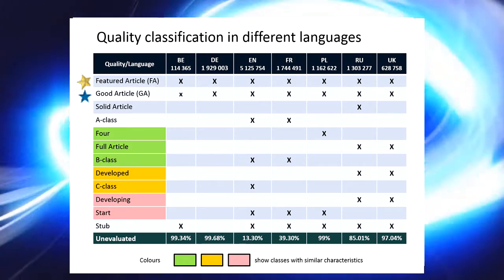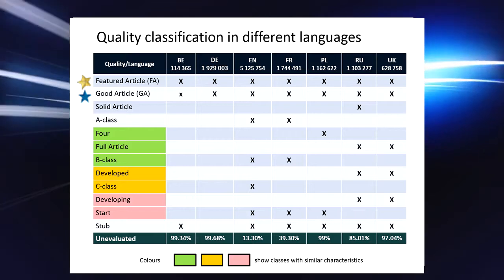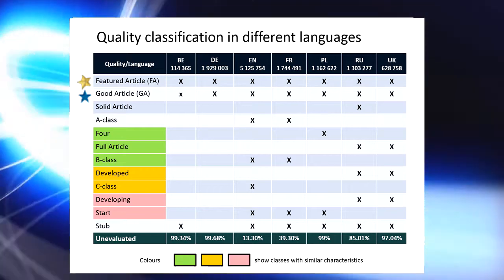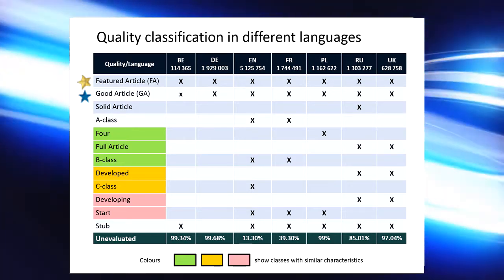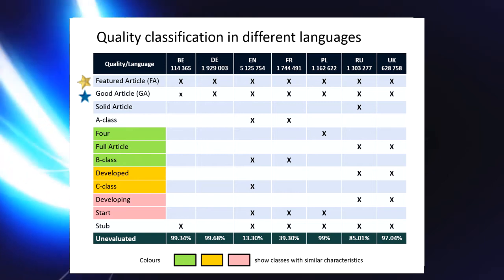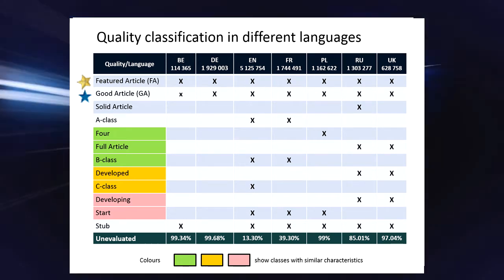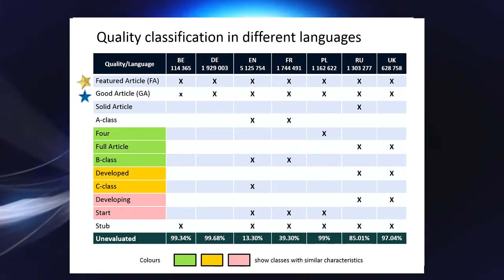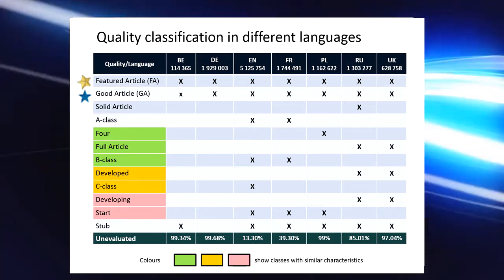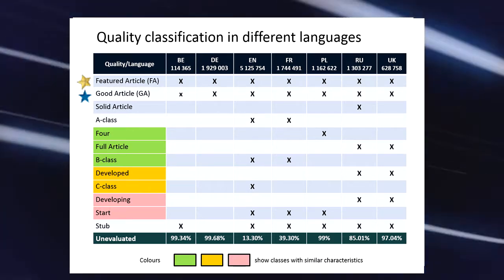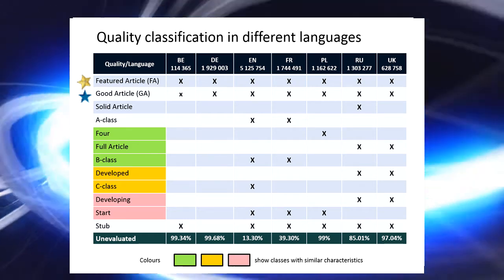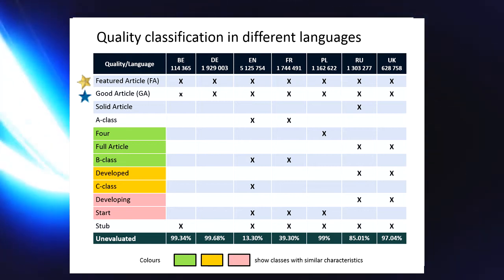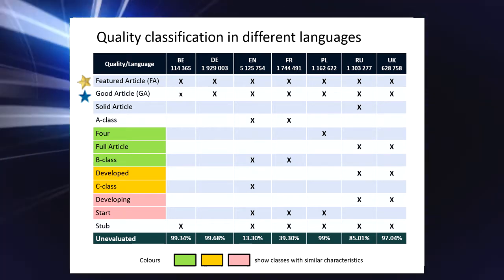The voting has to be initiated by an interested user, typically the main contributor, who very often also works on improving the article. As not all users are interested in starting the evaluation process, there is a problem of a large number of unevaluated articles. A concern is also the subjectiveness of the assignment of lower quality classes — a quality class can be assigned by a single user without any prior discussion, and a user interested in self-promotion might assign a higher class to the article than would result from the rules and principles.